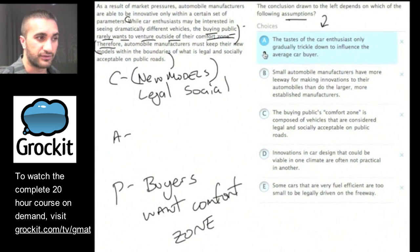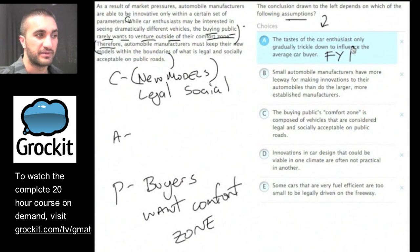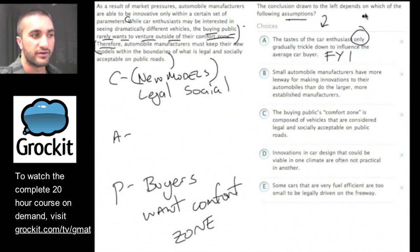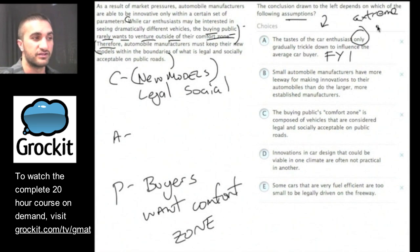Answer choice A: the tastes of the car enthusiast only gradually trickle down to influence the average car buyer. This is what I call the FYI answer choice — it doesn't have to be true for the argument to make sense. Also notice the extreme word 'only.' We should be really conscious of extreme language in answer choices. Why must it be true that tastes only gradually trickle down? Let's eliminate A.